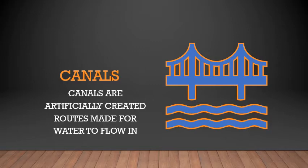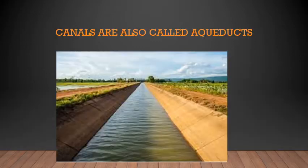Canals are also called aqueducts — A-Q-U-E-D-U-C-T-S. Rivers naturally make their paths to flow in, but in a canal we create a path for the water to flow in. This way, the water reaches the places where we want it.